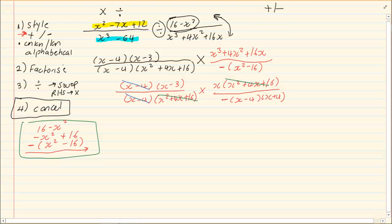We can cancel x squared plus 4x plus 16 with the top x squared plus 4x plus 16. Then, what are we left with now? On the top, we have x minus 3 and x. So, we are going to write it as x into x minus 3. And, at the bottom, we have a minus and then we have x minus 4x plus 4.